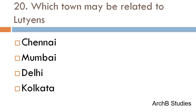Which town may be related to Lutyens — Chennai, Mumbai, Delhi, or Kolkata? The correct answer is Delhi.